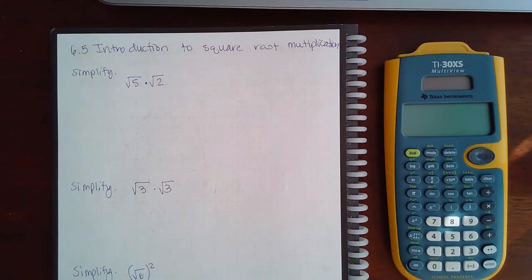Here we have 6.5 introduction to square root multiplication. Actually, when we were simplifying radicals, we were already doing square root multiplication. When we had two square roots together, we went ahead and multiplied the insides together.